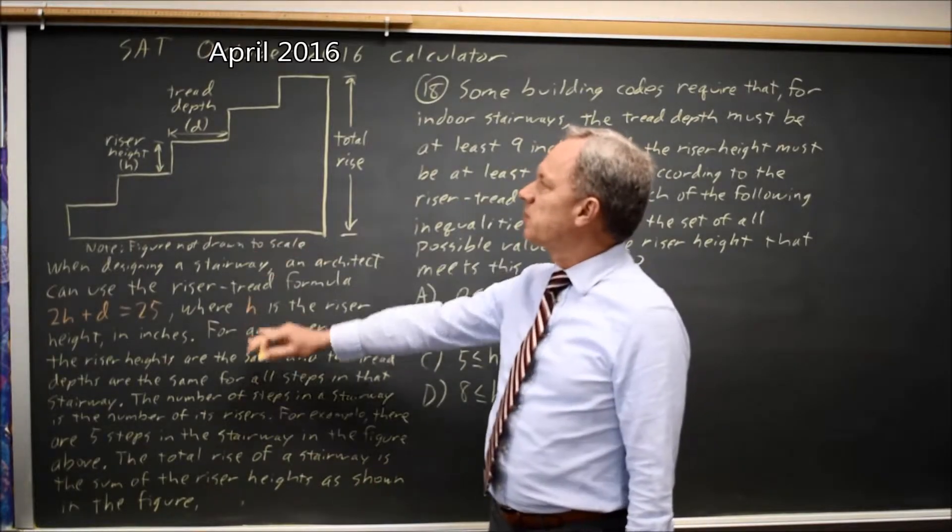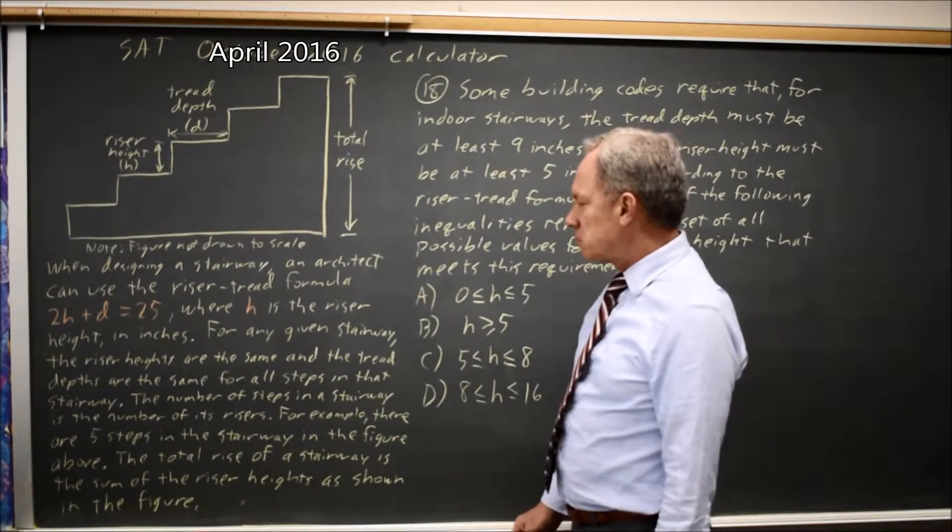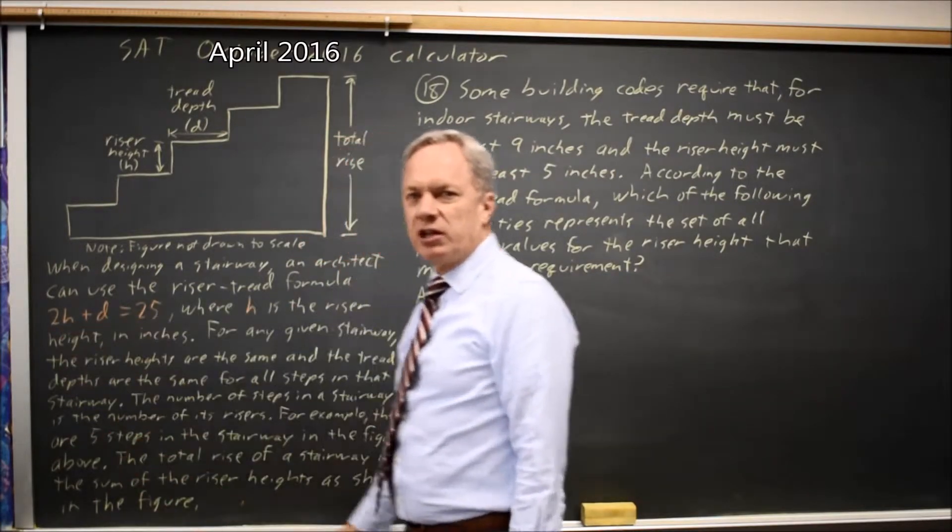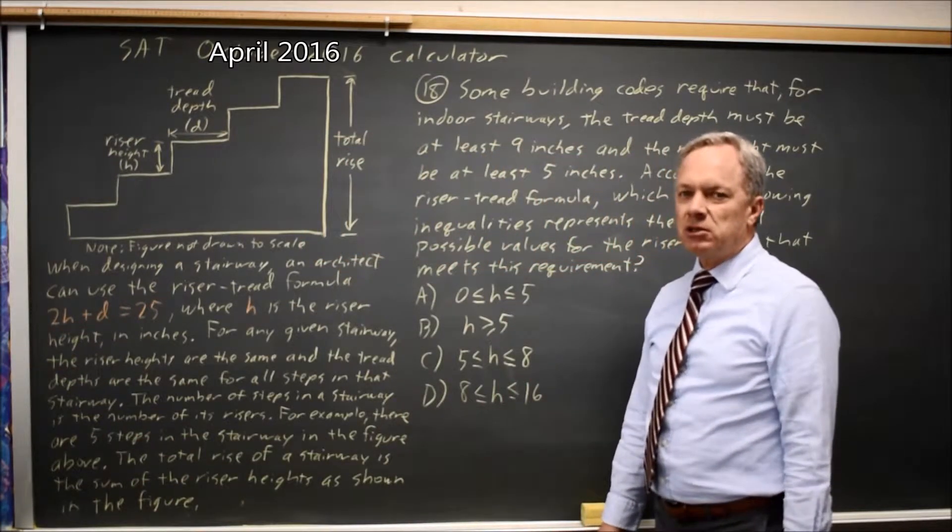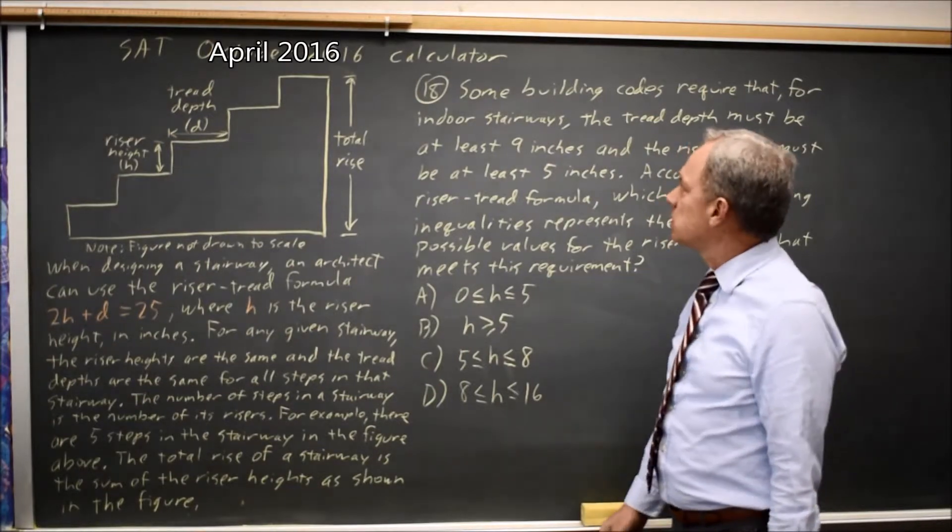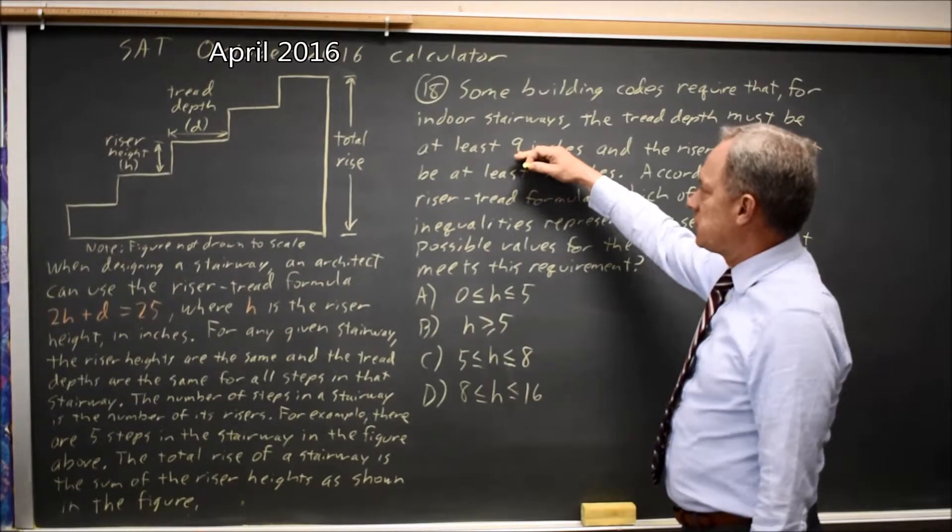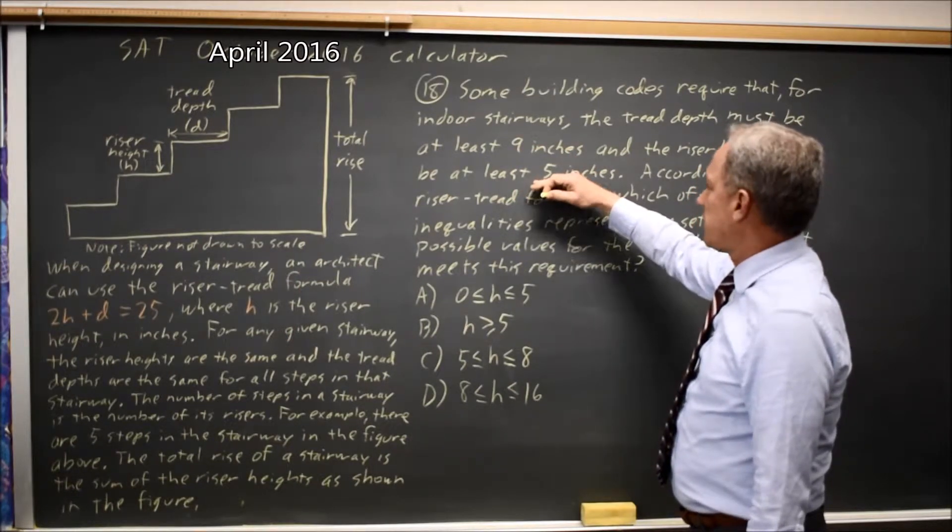College Board gives you a diagram and paragraph about designing stairs with the riser tread formula 2H plus D equals 25, and they ask what's the possible range of values for H if building codes require tread depth D at least 9 and riser height H at least 5.